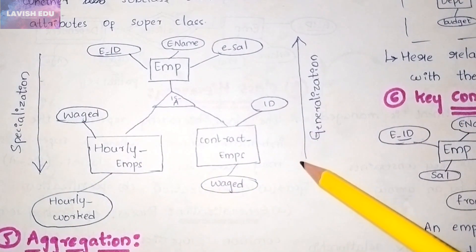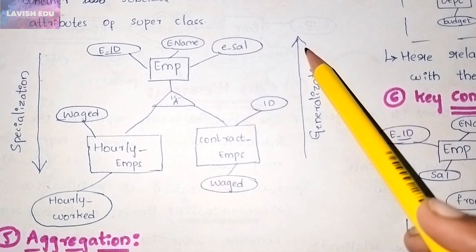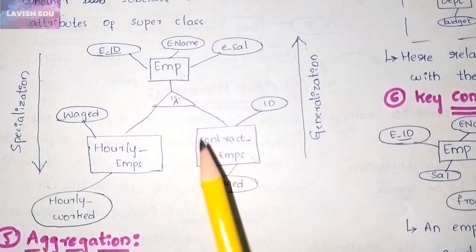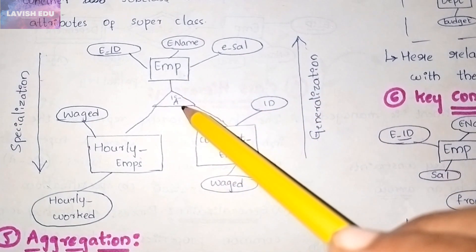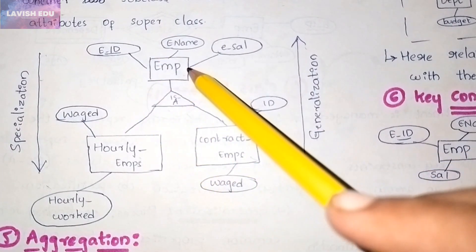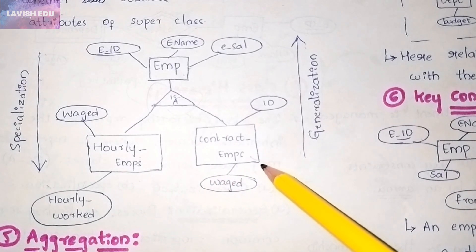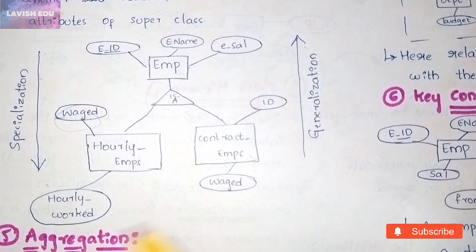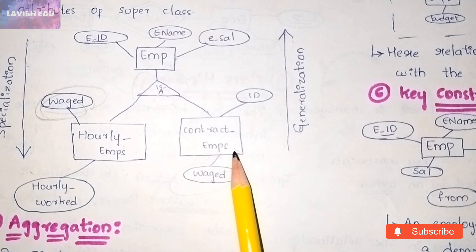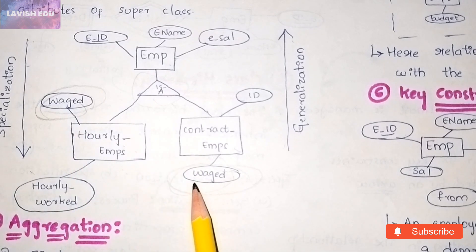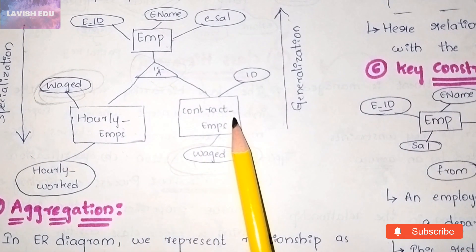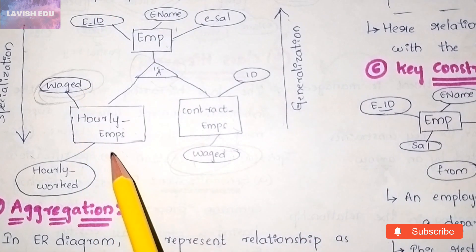Here is an example for generalization and specialization. Specialization is a top-down approach whereas generalization is a bottom-up approach. Employee, Hourly Employee, and Contract Employee are the three entities. Employee is the superclass and Hourly Employee and Contract Employee are subclasses, linked by an 'is-a' relationship. Both subclasses can share common attributes such as 'wage' — this is the overlap constraint. When the subclasses inherit all properties from the parent, that is the covering constraint.